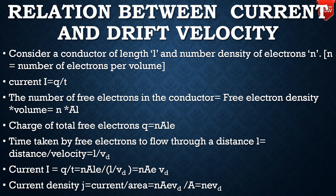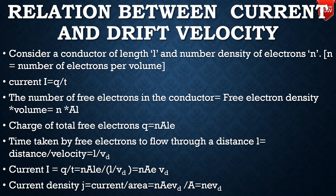The total charge of free electrons Q is equal to n times A times L times e. The time taken by free electrons to flow through the distance L is t = L divided by drift velocity V_D. The current I equals Q divided by t, which gives I = nAeV_D. The current density J is equal to n times e times drift velocity V_D.